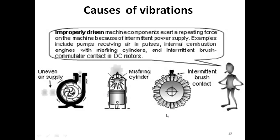Another cause of vibration in electrical generators and DC motors is intermittent brush contact. Normally carbon brushes bring current into or out of the machine. If there is intermittent brush contact, the load on the machine would vary, causing the electrical motor or generator to severely vibrate.